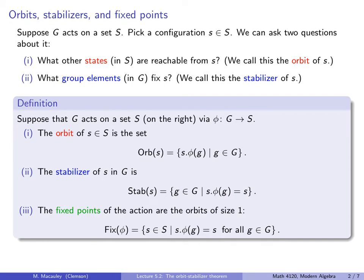Finally, the fixed points of the action are the orbits of size one. We denote this as Fix(phi), and it's the set of elements in big S that are fixed by every g in the group — that is, s dot phi(g) equals s for all g. So pressing any button in the group fixes s.